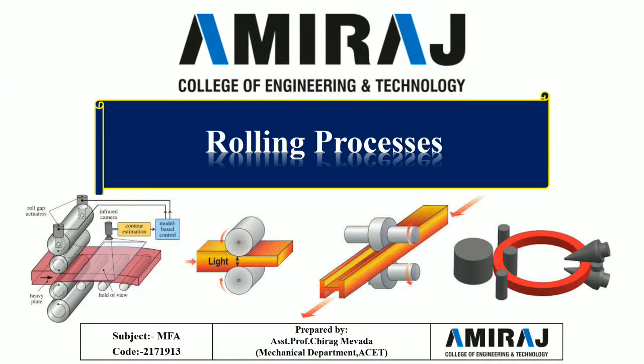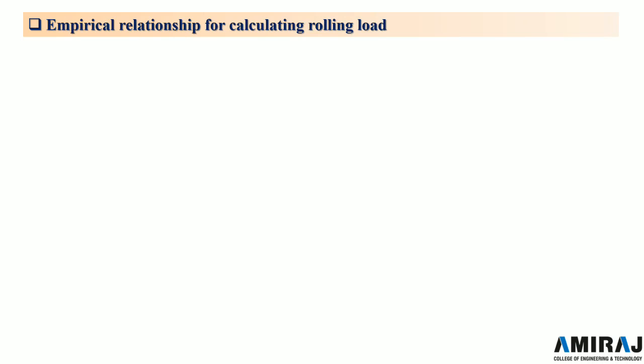In the previous lecture, I explained the condition for biting of strip by rolls and one example for it. In today's lecture, I will explain about roll passes and friction in rolls. Before that, there is one empirical relation for calculating rolling load. In the previous lecture, I discussed how to calculate the load using the formula, the condition for biting, the coefficient, the angle of bite, and final strip thickness.